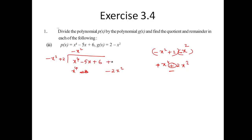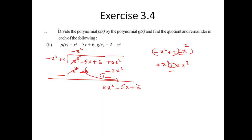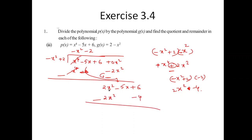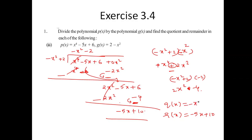Writing minus X⁴ minus 2X², and since we have no extra X² from the dividend I add 2X² separately. Subtracting gives X² and the rest stays as is. Taking the divisor again with minus 2: resultant is X² minus 4. Subtracting through, the remainder is minus 5X plus 10, and the quotient is as computed.